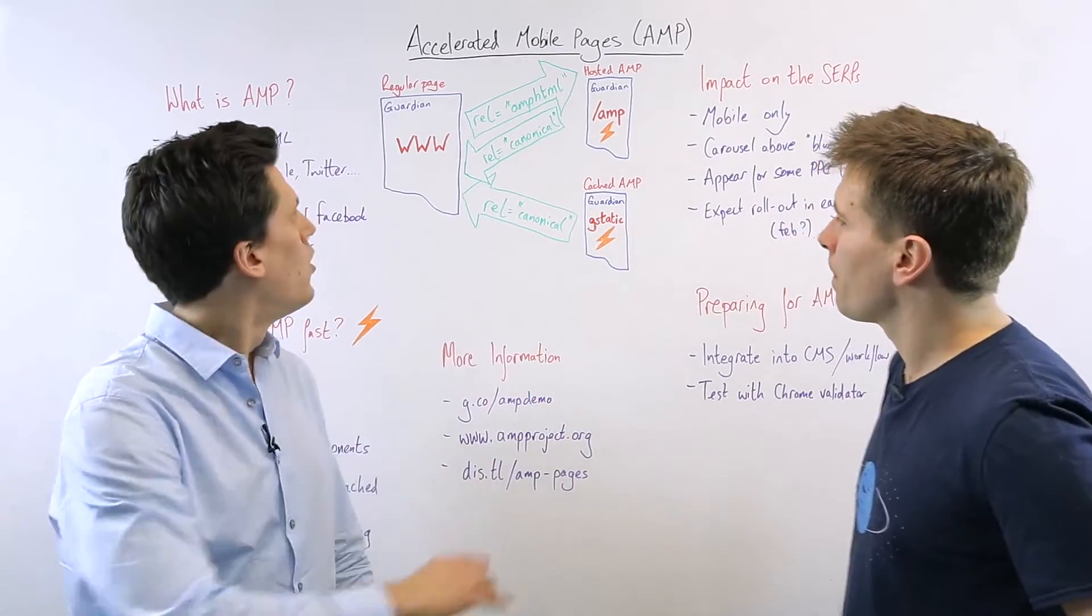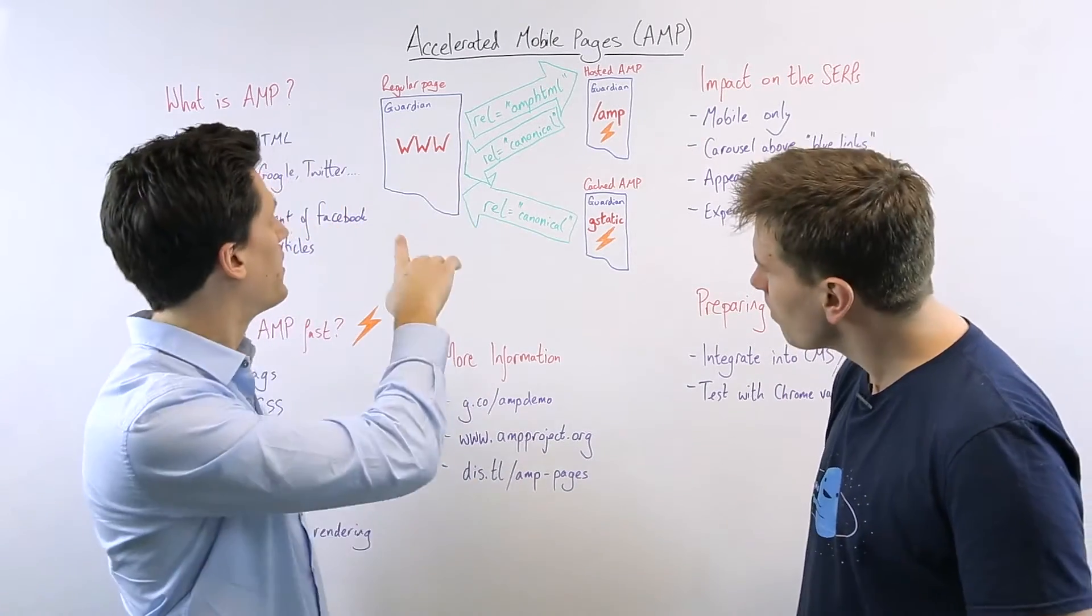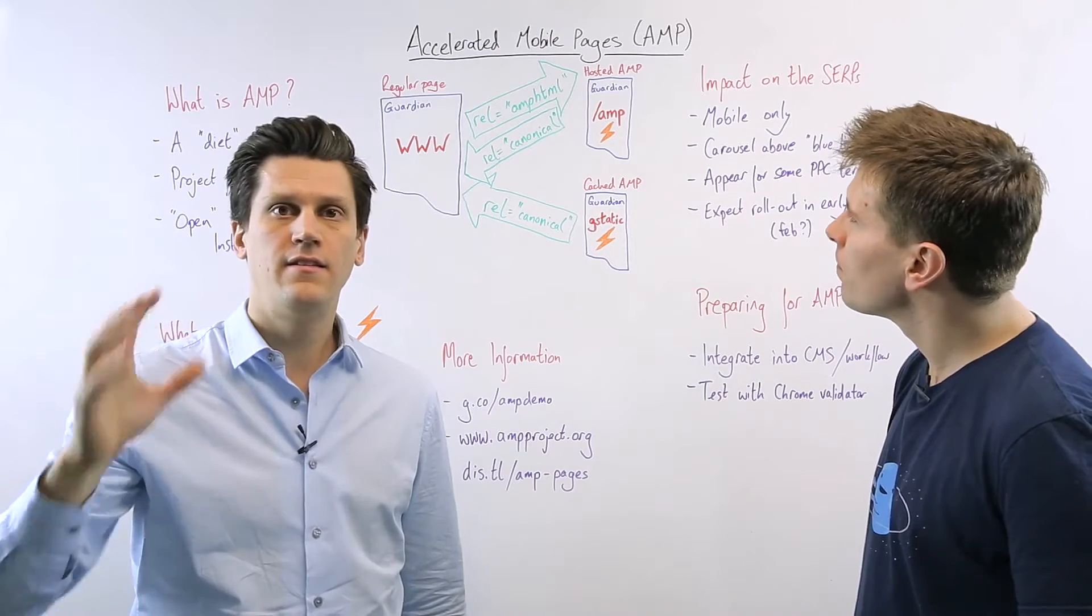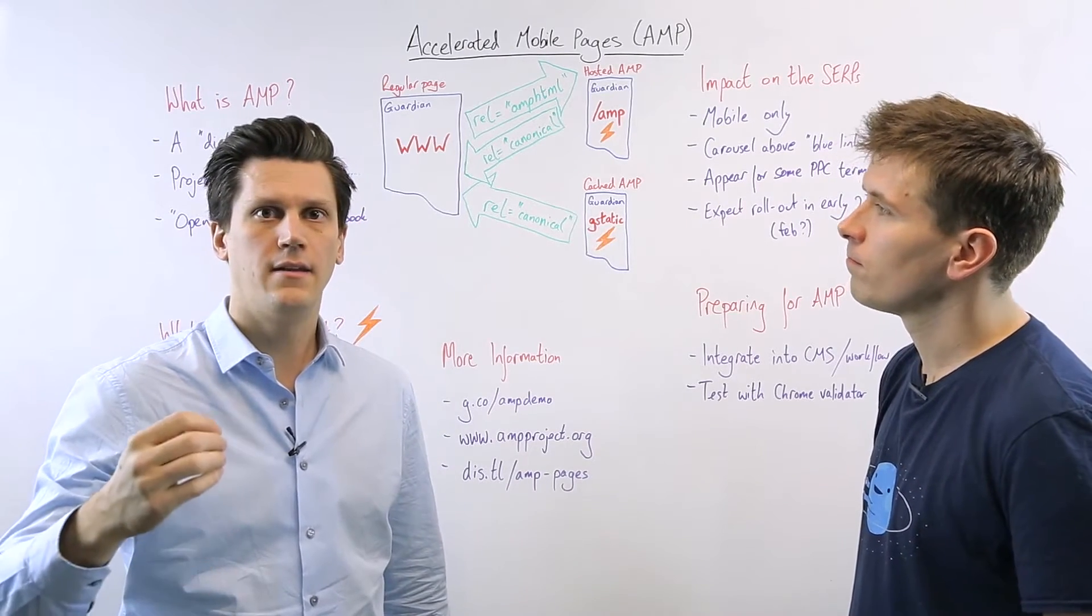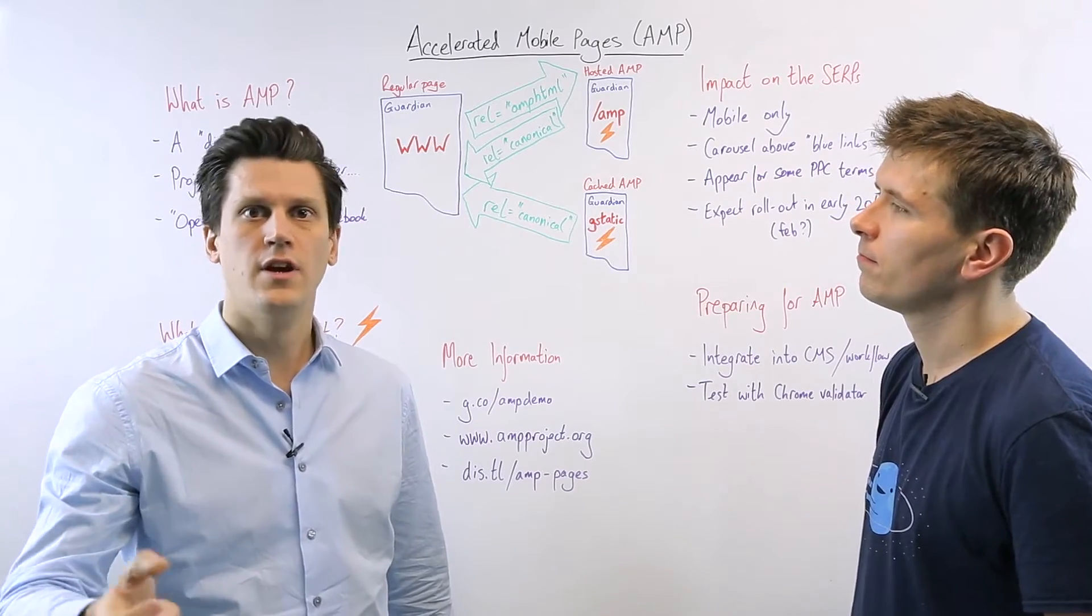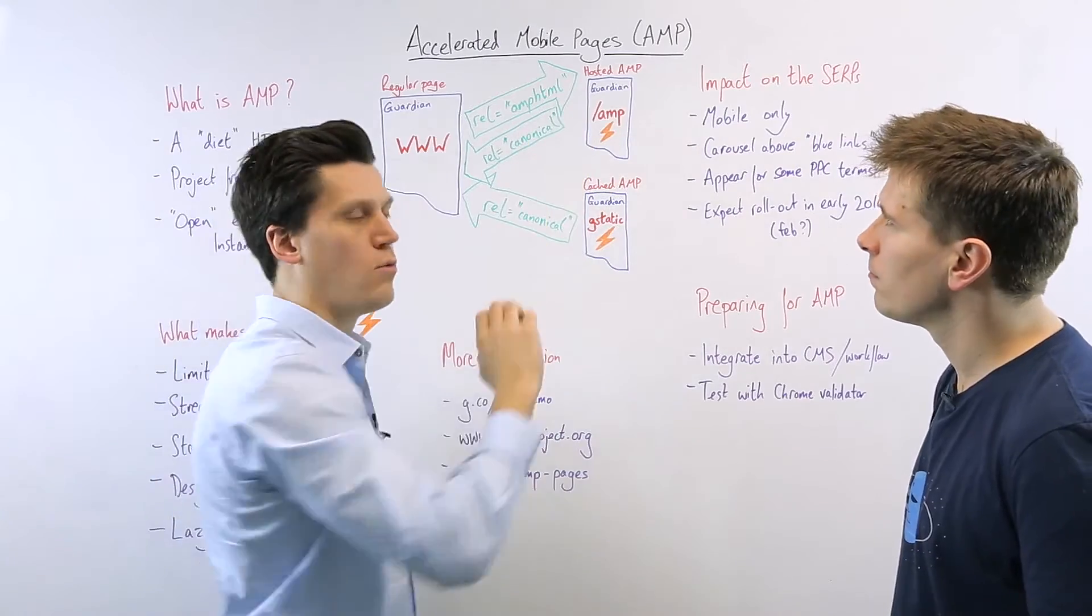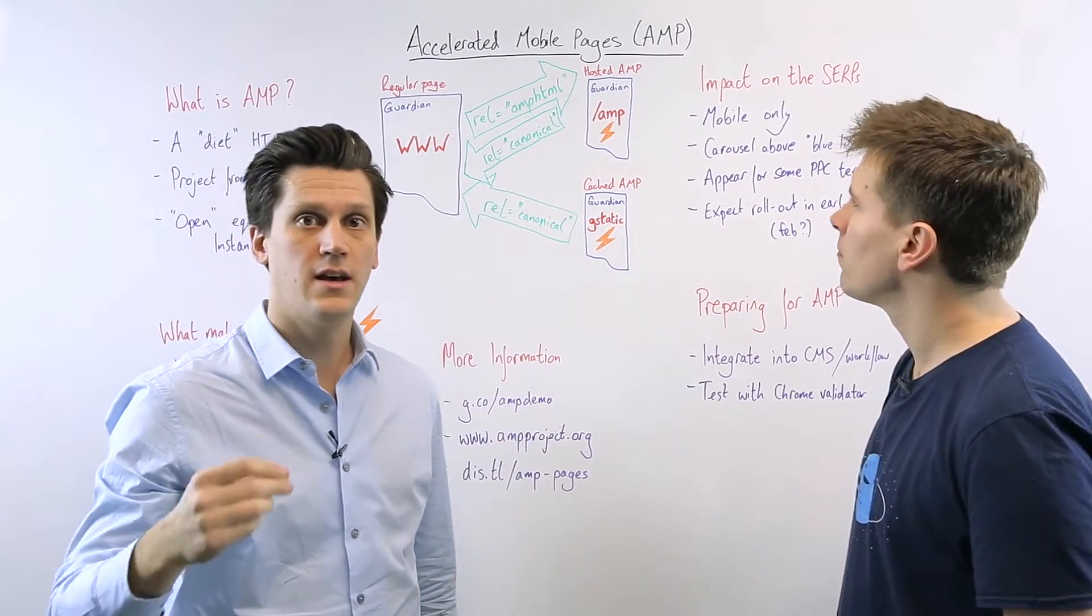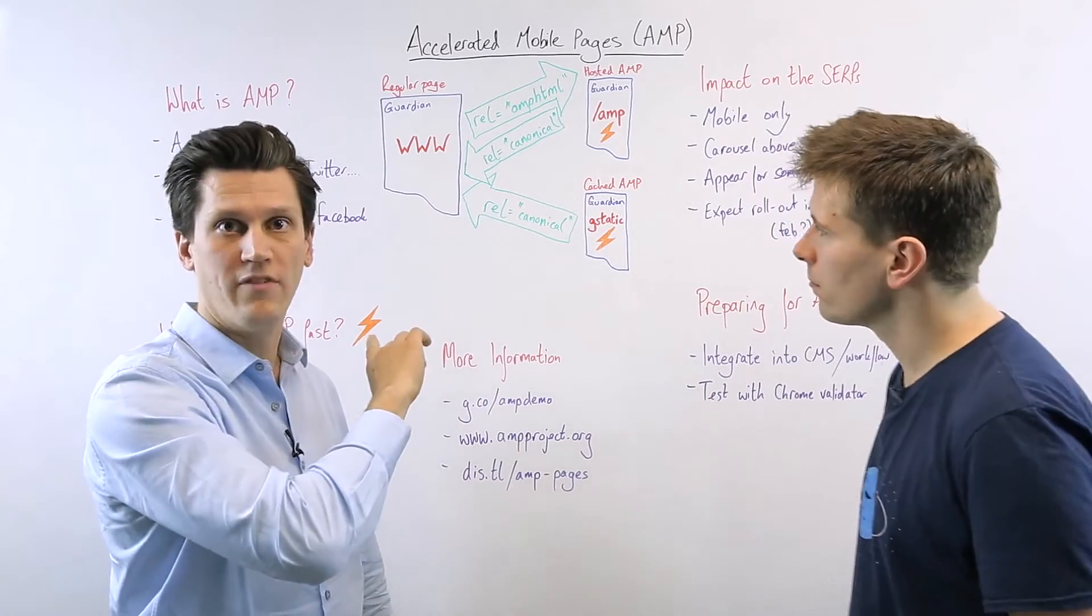Were you going to tell us how that works? Yeah. So that's the diagram we have in the middle here. So we're all used to this idea of a regular web page. I've called this www in the diagram. And this is the regular desktop version of the page. And in the source code, if you have an AMP version, you would designate that with the rel amp HTML link, which points over to what we call hosted AMP page. So this is a page on your own domain constructed of this stripped down form of HTML.